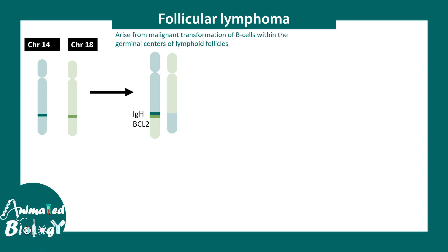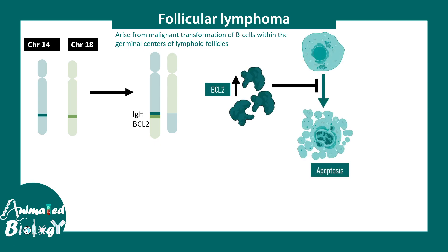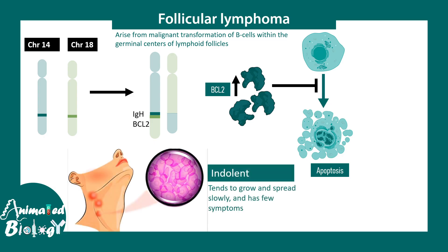A translocation happens between chromosome 18 and chromosome 14. As a result, BCL-2 comes under the influence of IgH — similar to Burkitt's lymphoma — where a gene regulating cell division comes under the heavy influence of a strong promoter. This leads to overproduction of BCL-2, which is a molecule that prevents apoptosis. Normally B cells that can't encounter pathogens would die, but when BCL-2 is upregulated they cannot die. These cancers are indolent — they tend to grow and spread at a very slow speed and are more manageable clinically.